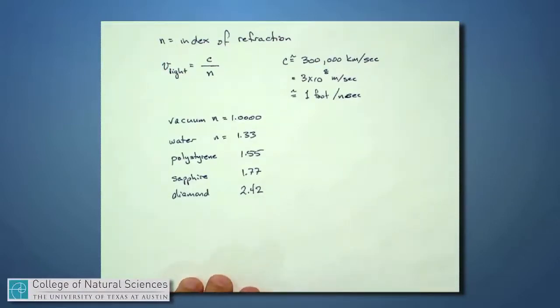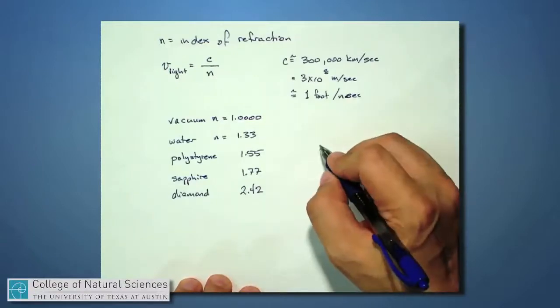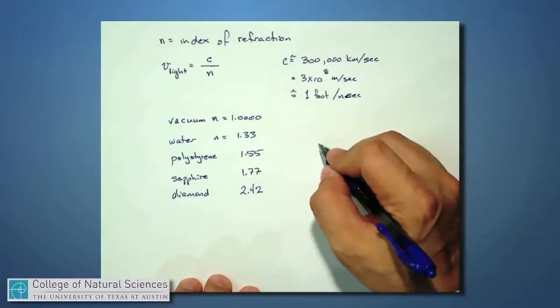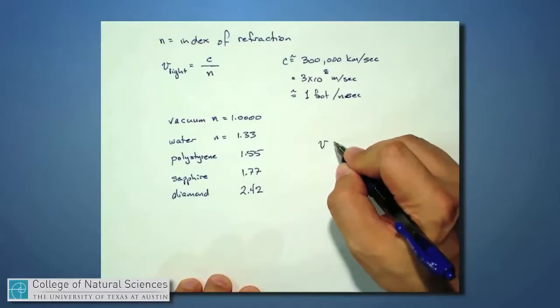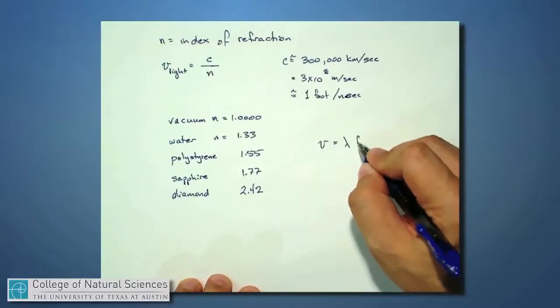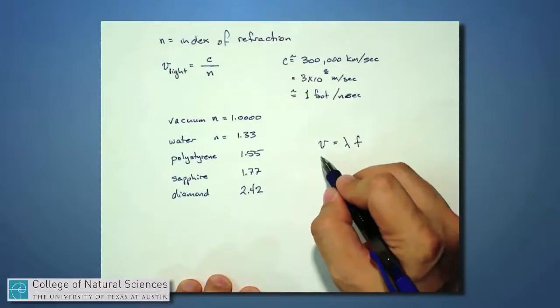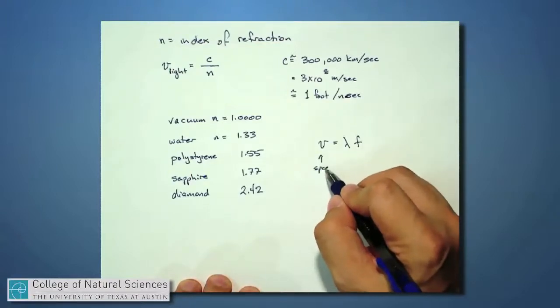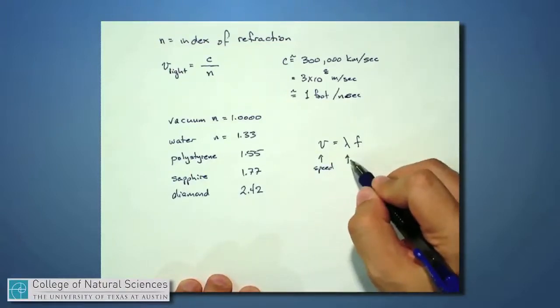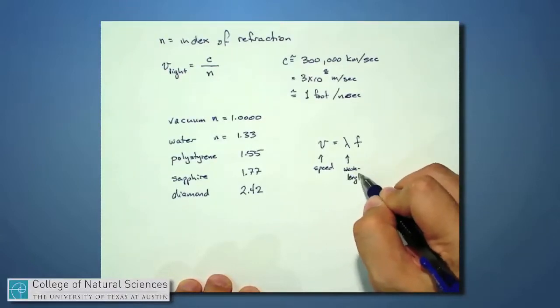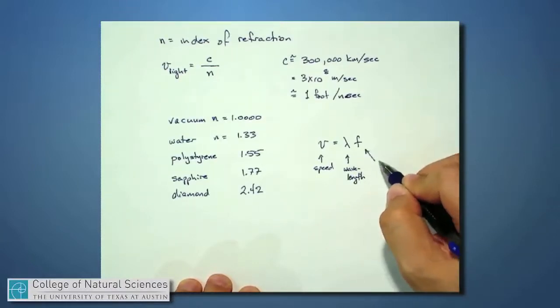Something else that we should know about is that all light or all waves obey a certain relationship between the wavelength of the wave and the frequency of the wave. So if this is speed, this is wavelength, and this is frequency.